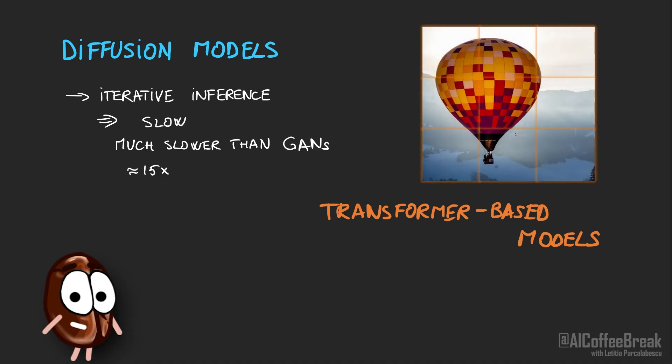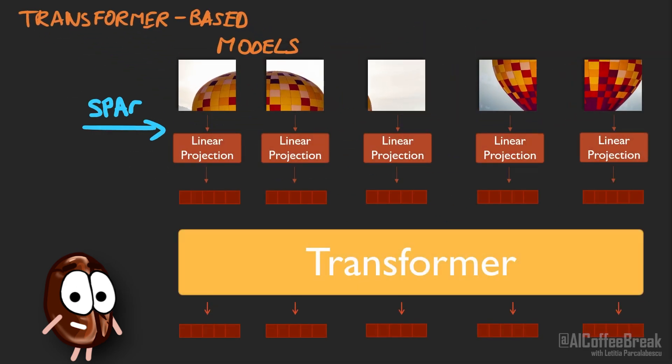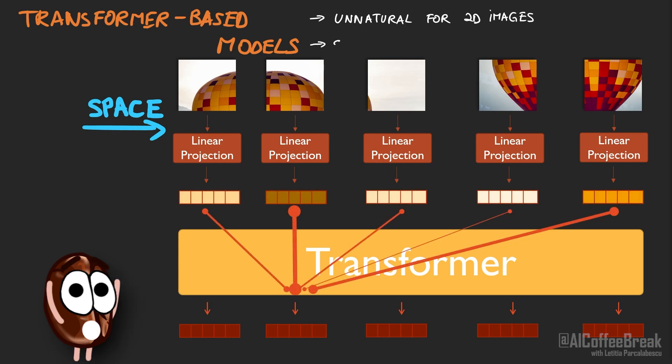Transformer-based image generators have two problems. As transformers usually work with sets of vectors, one must project the two-dimensional images into vectors. One should not use too many vectors as a representation for each image, since the computation time grows quadratically with the number of vectors, so with the sequence length, due to the self-attention layers.